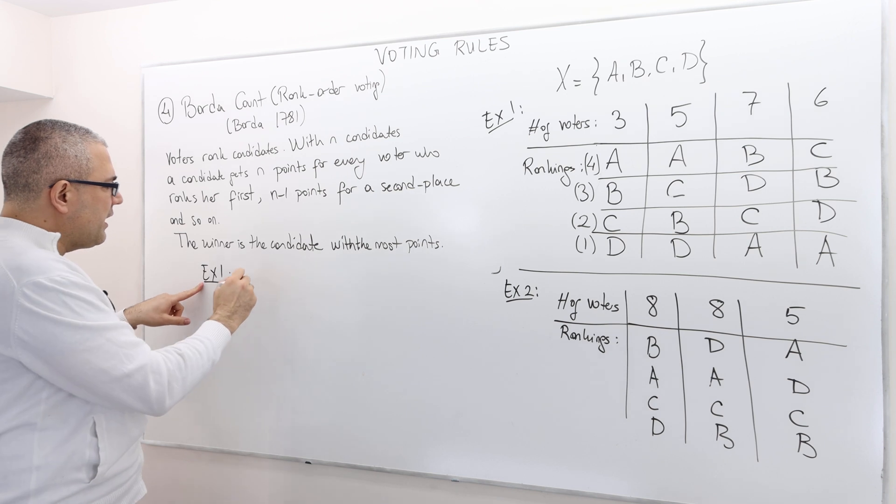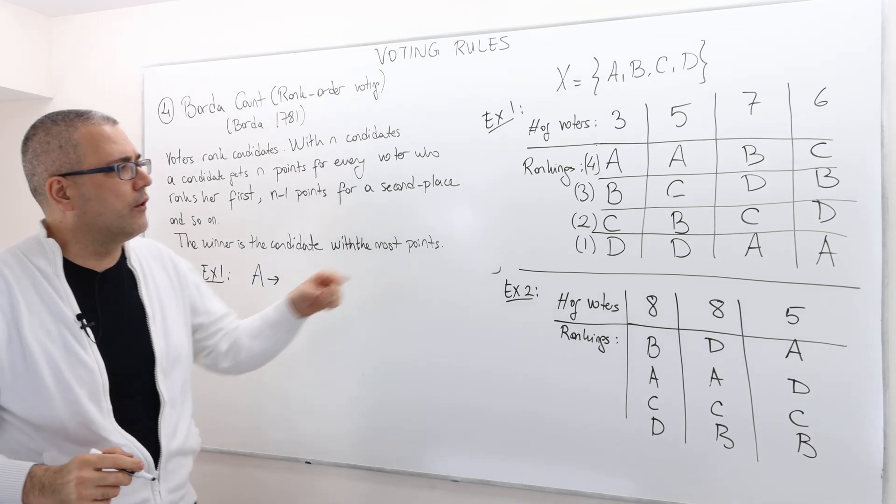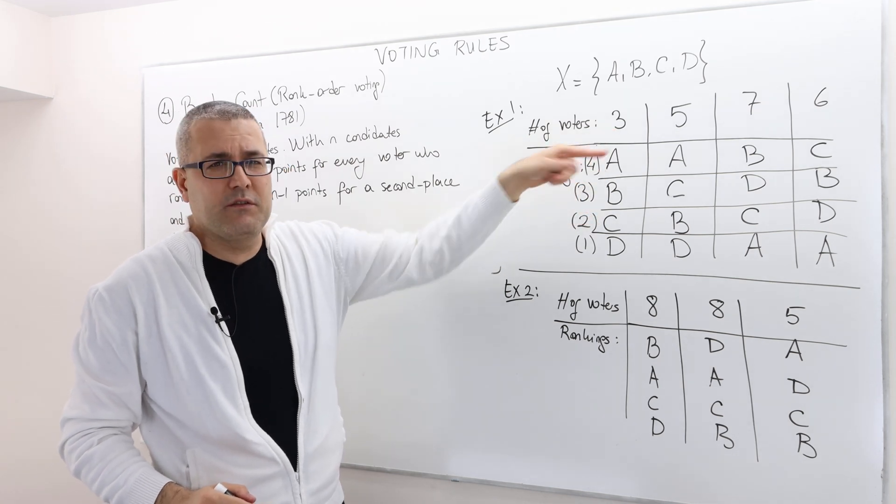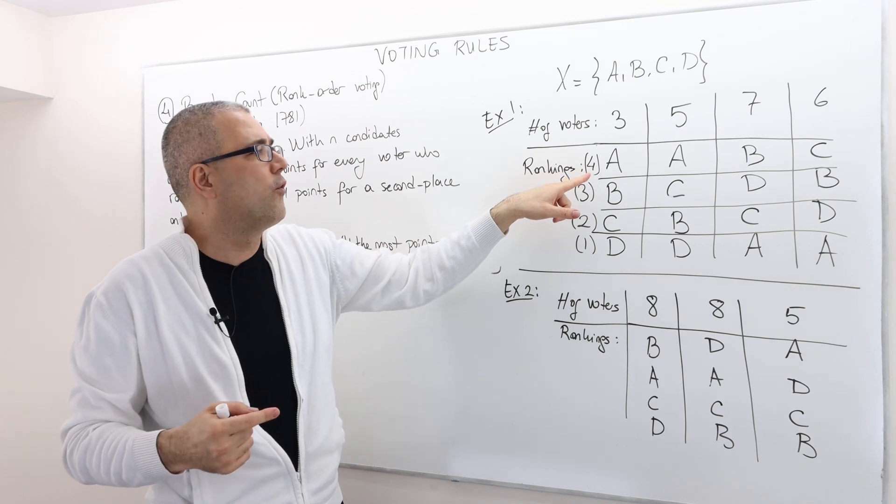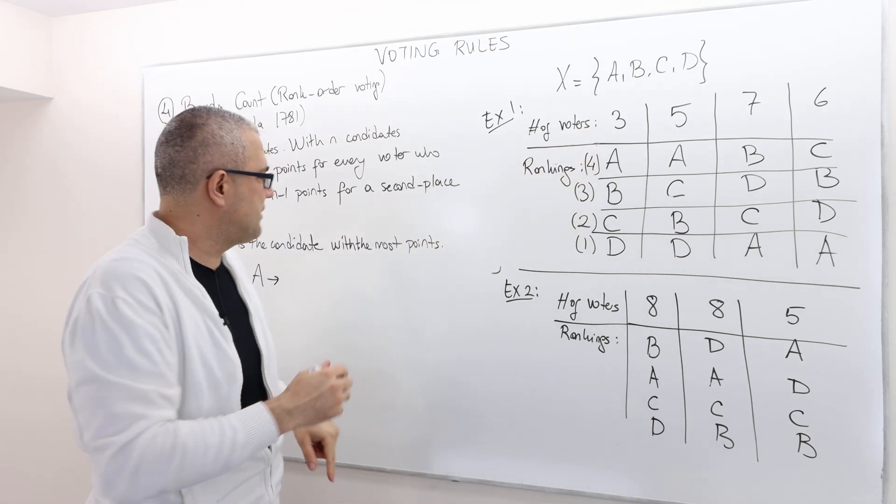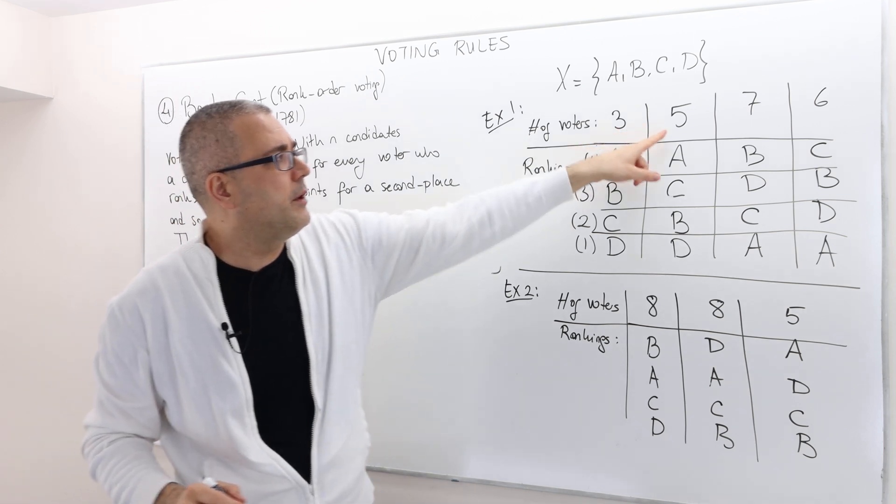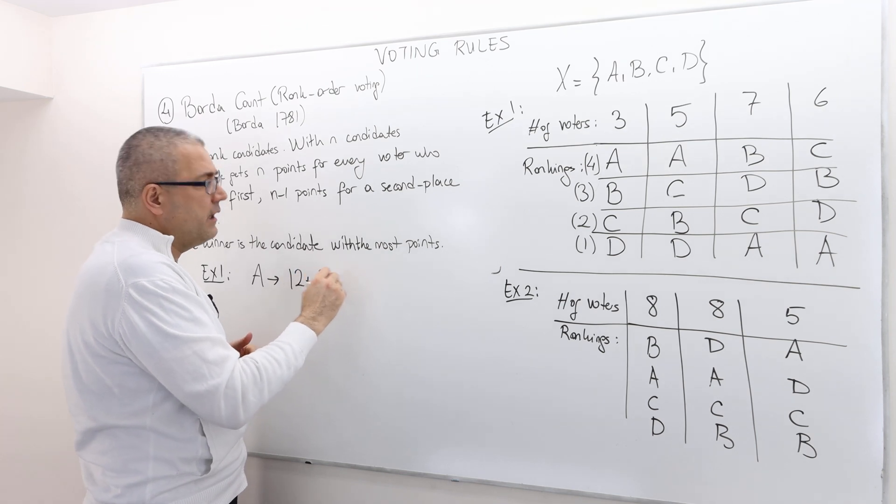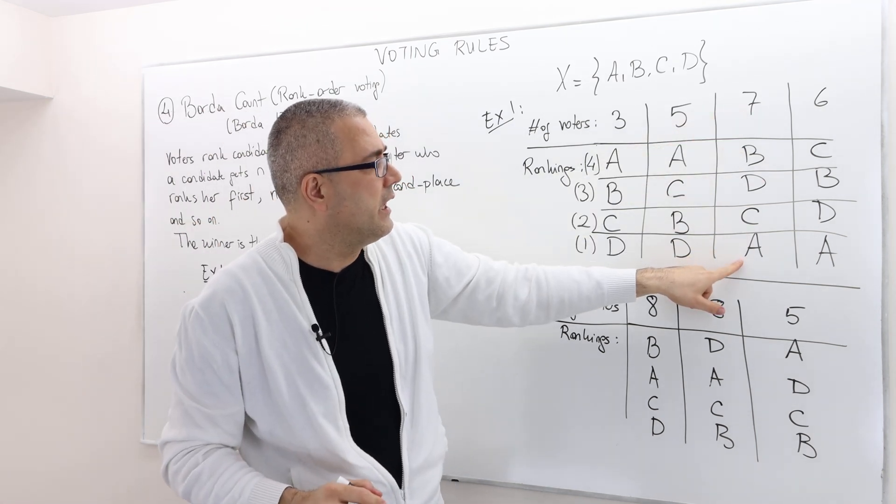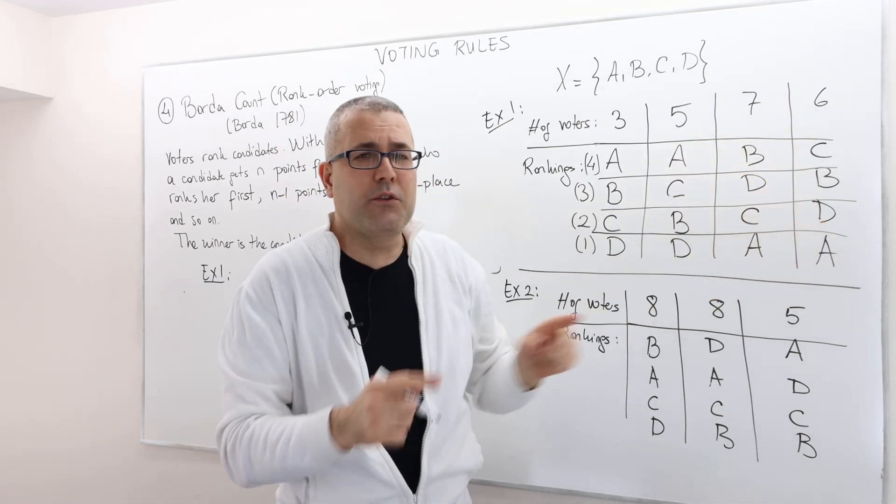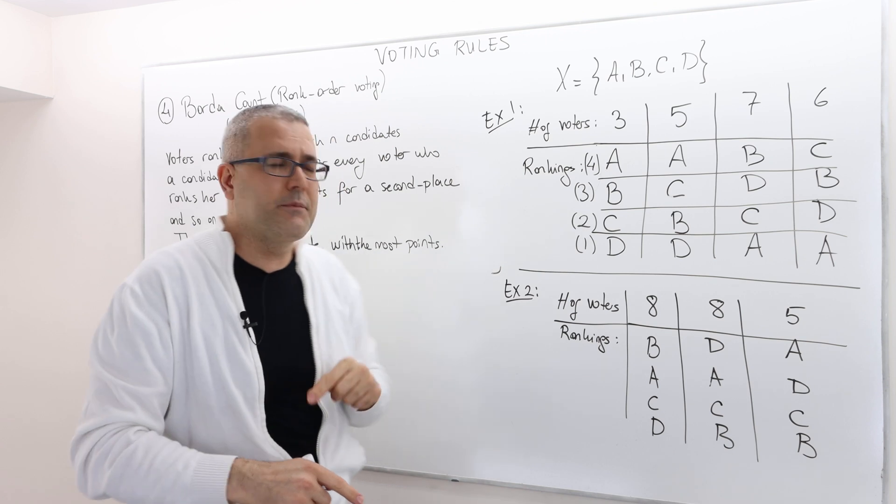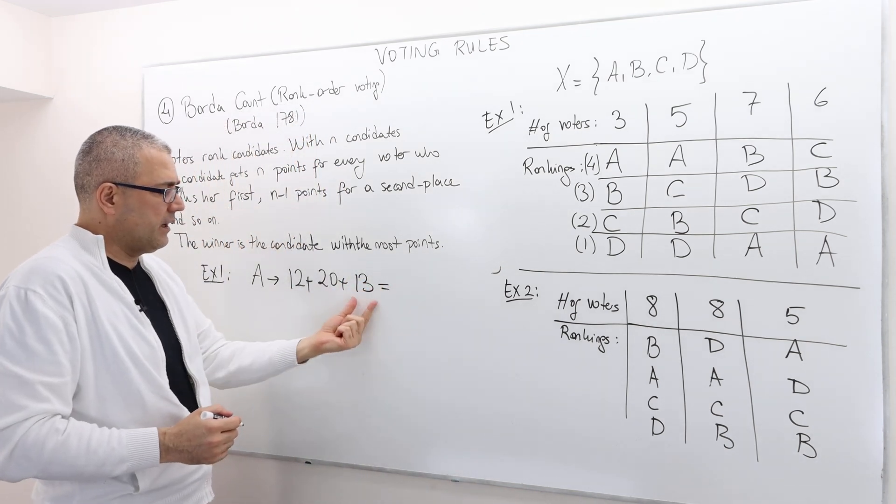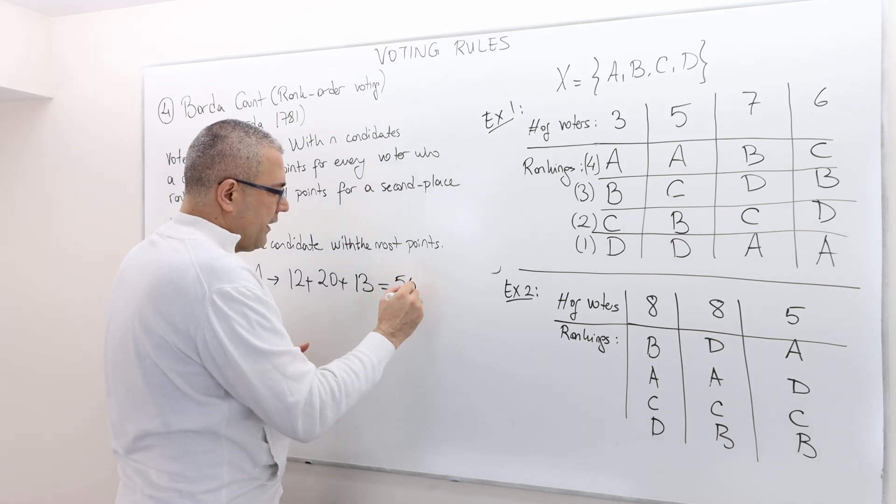So in this case, for example, what is the Borda count of candidate A? Well, three people rank him first, so four times three. Remember for each voter he gets four points. So four times three, 12, plus five people vote him second, first again. So five times four, 20, plus seven people vote him last and also another six people, so 13 people vote him last. So 13 times one, plus 13. So basically this is 35 to 20, 55 points.